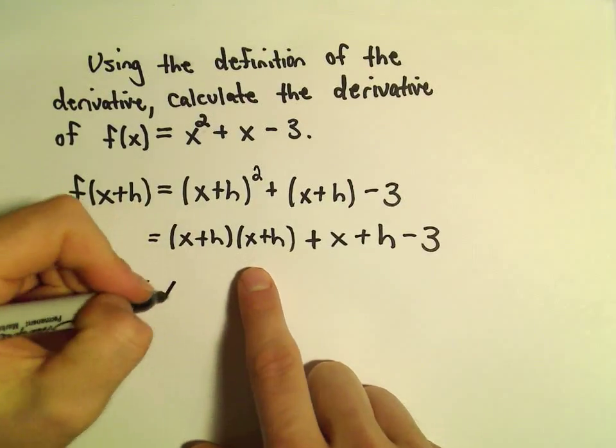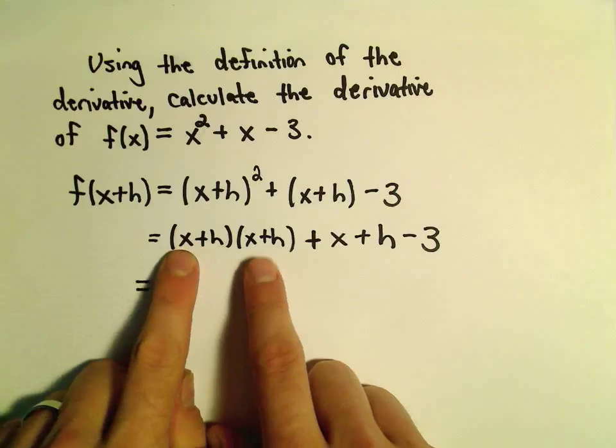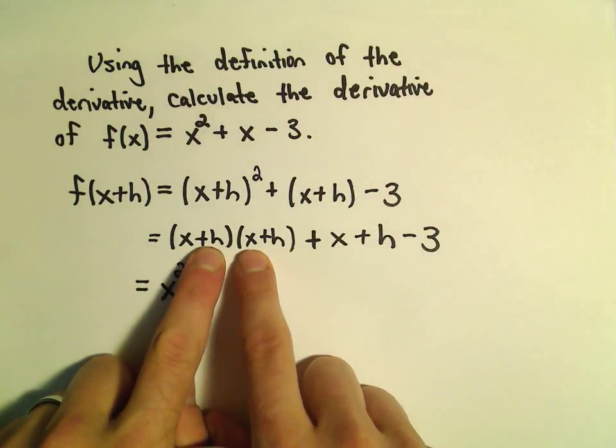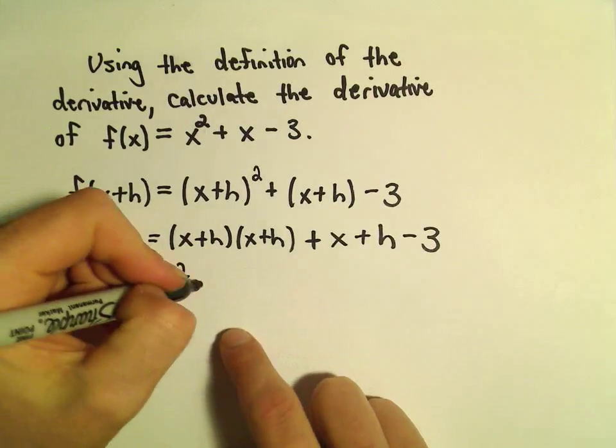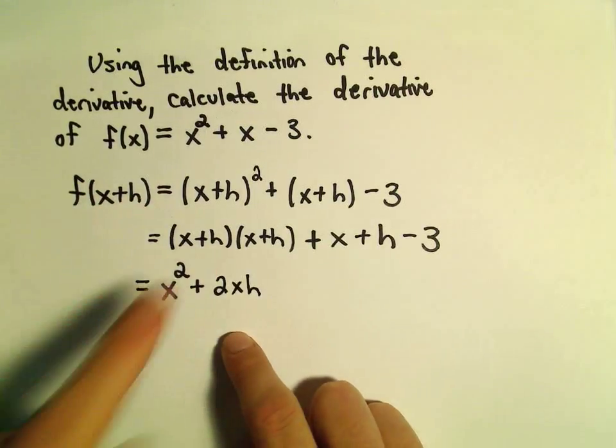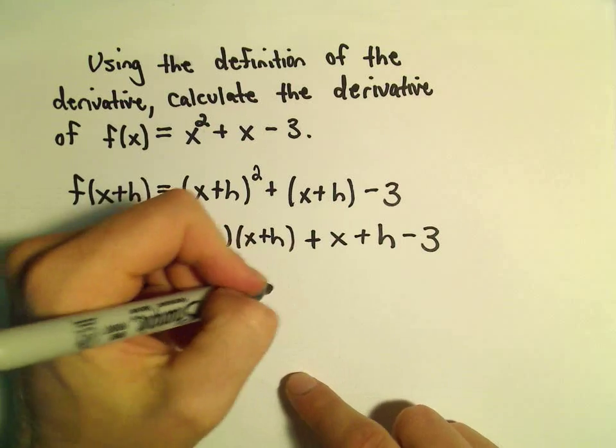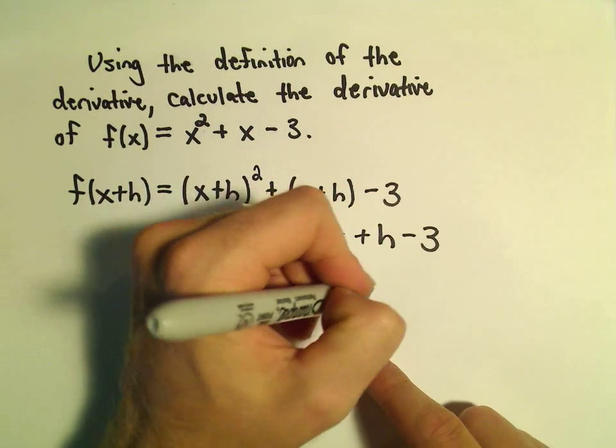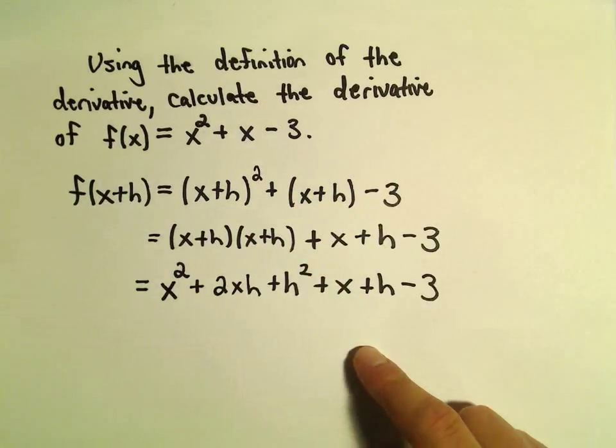Well, when we distribute, we'll get x times x, which will be x squared. We would get an x times an h, and then we would get an h times an x, which is the same thing as xh. So we would have two of those, so 2xh. And then h times h would be h squared.